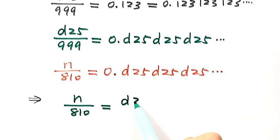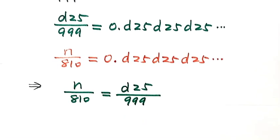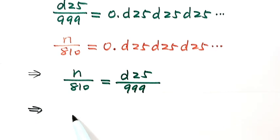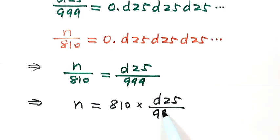Then both sides times 810. Then n equals 810 times d25 over 999.